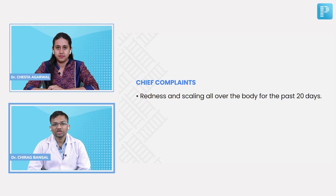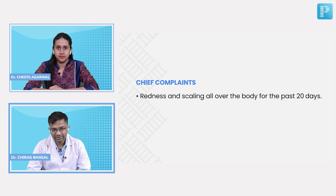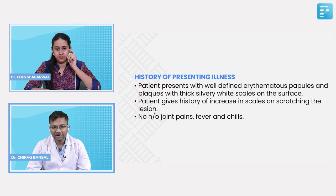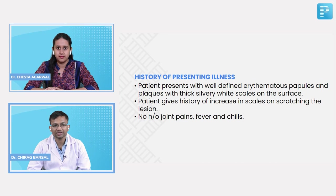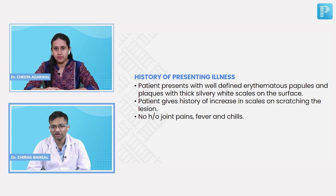The patient presented with chief complaints of redness and scaling all over the body for the past 20 days. The patient was apparently well 20 days ago, when he presented with well-defined erythematous papules and plaques with thick silvery white scales on their surface. There is history of increase in scales on scratching the lesion, but no history of joint pain, fever, or chills.